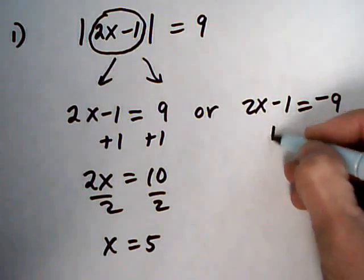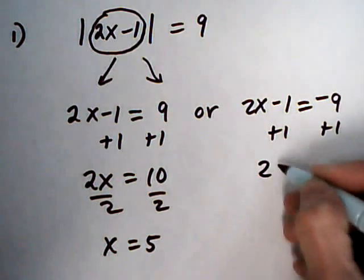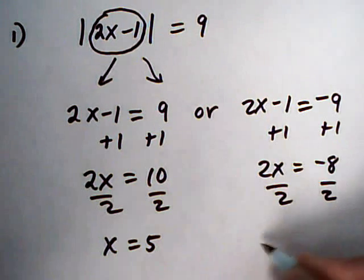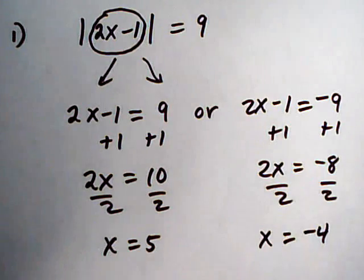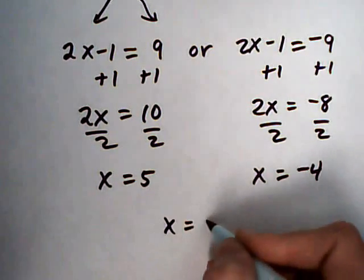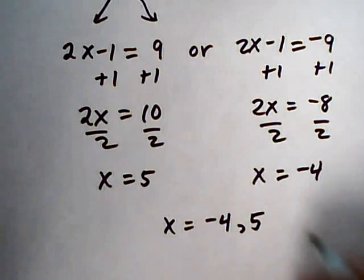On the other side, follow the same process. Add 1, 2x is minus 8. Divide by 2, x is minus 4. So those are our two solutions and we would show it as x equals minus 4 comma 5.